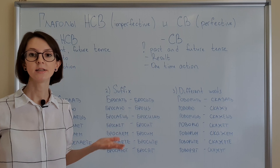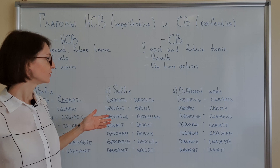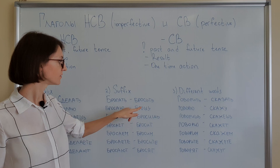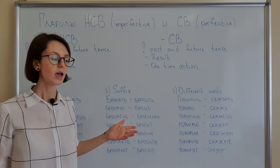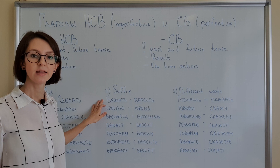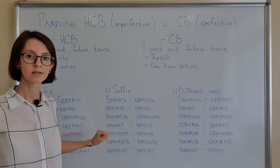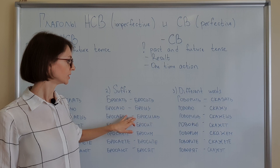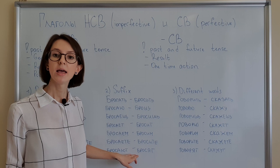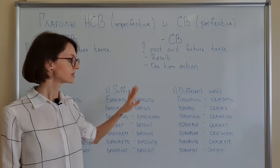Column number two: verbs made with suffixes. Here, unfortunately, I don't have any tips. Some of them you need to remember by heart. You can see that consonants are changing, and some of them follow the rules perfectly. And automatically, since SV verbs don't have present tense, this conjugated form will be future.